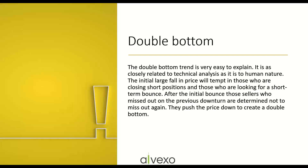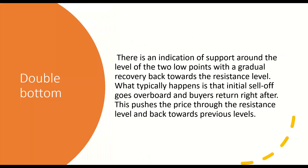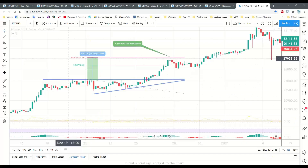A double bottom trend is very easy to explain. It's as closely related to technical analysis as it is to human nature. The initial large fall in price will attract those who are closing short positions and those who are looking for a short-term bounce. After the initial bounce, those sellers who missed out on the previous downturn are determined not to miss out again, and they push the price down to create the double bottom. There is an indication of support around the level of the two low points with a gradual recovery back towards the resistance line.